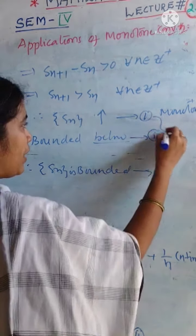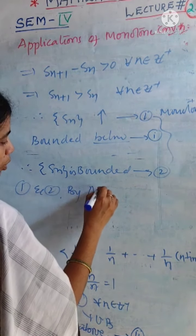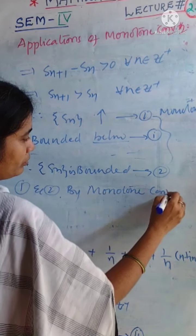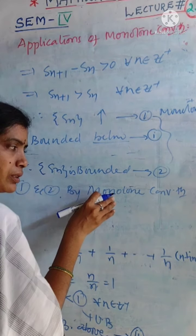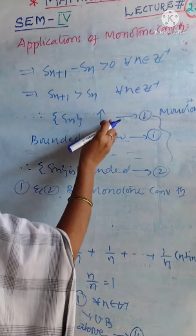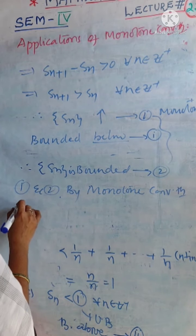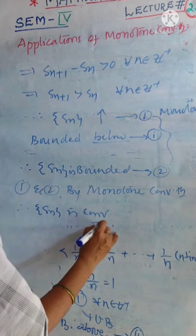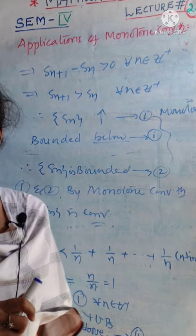From cases 1 and 2, by the monotone convergence theorem, we can say that any monotone sequence which is bounded is convergent. Therefore, Sn is convergent. Like that, we can observe the condition. Thank you.